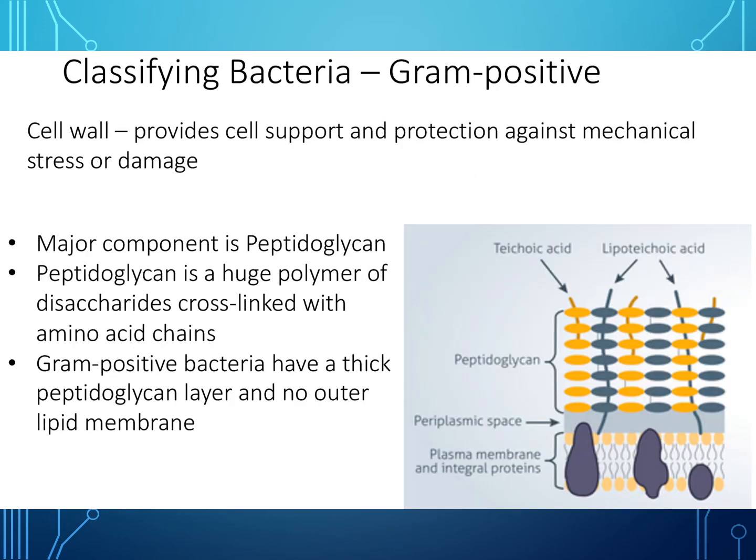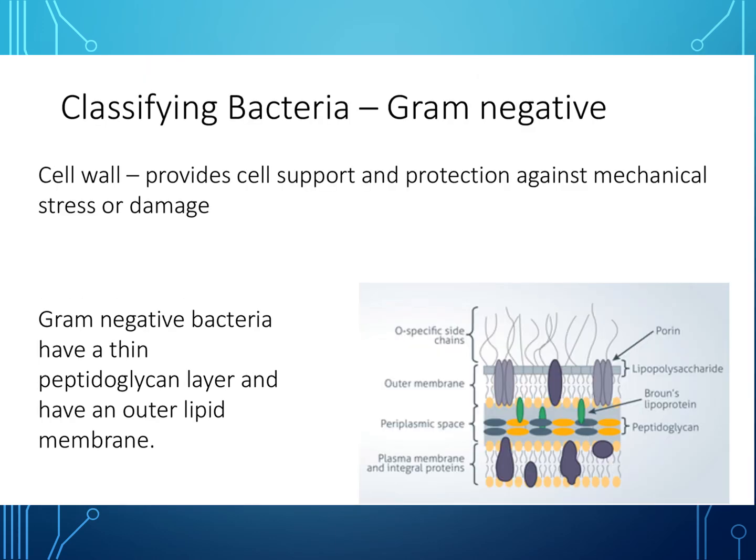Gram positive bacteria have a cell wall which provides cell support and protection against mechanical stress or damage. The major component is peptidoglycan, which is a large polymer of disaccharides linked by amino acid chains. Importantly, gram positive bacteria have a thick peptidoglycan layer and no outer lipid membrane. Gram negative bacteria also have a cell wall but in contrast have a thin peptidoglycan layer and an outer lipid membrane. Make sure you know the difference between the structure of gram negative and gram positive bacteria.